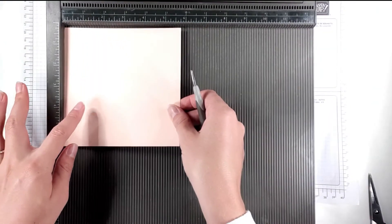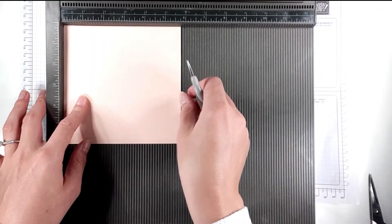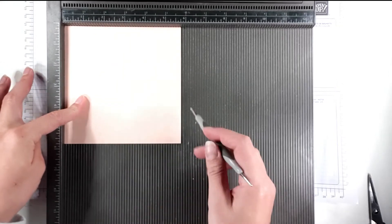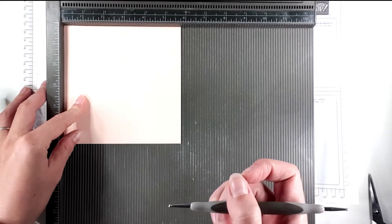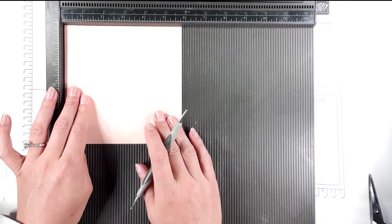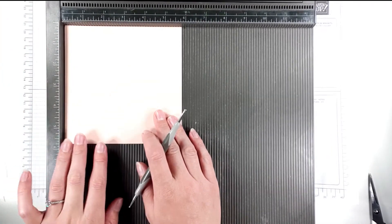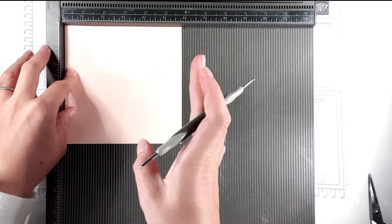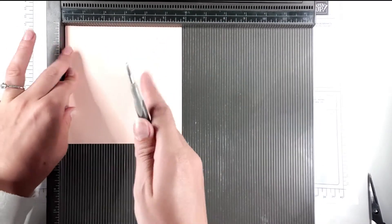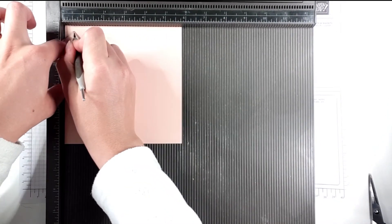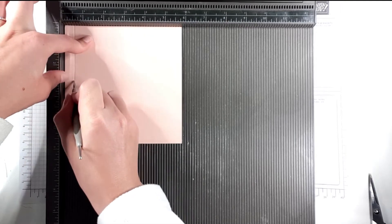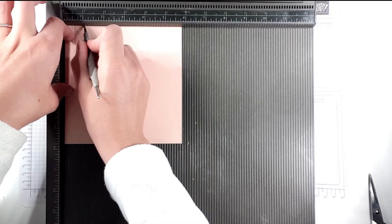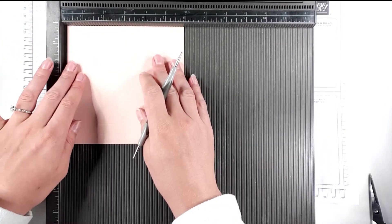While I've got my scoreboard out I'm just going to score the lid as well. I've got a piece for the lid that's five and three quarter inches square. I'm going to move it just slightly away from the edge of the scoreboard - that helps the lid fit on the box. Then I'm going to score it at half an inch and one inch, and I'm going to do that on each side.